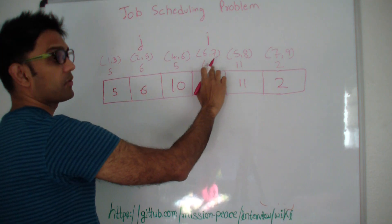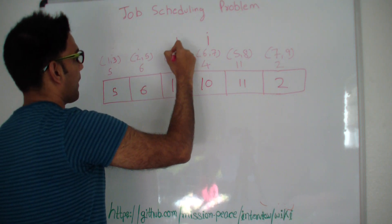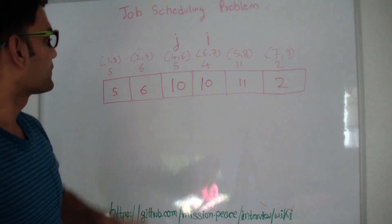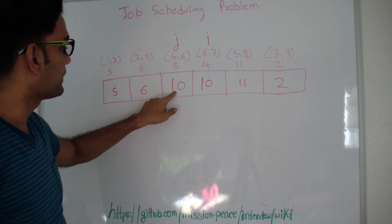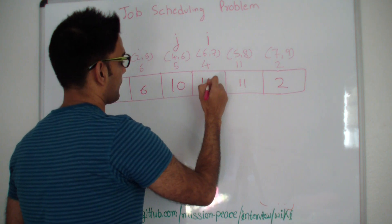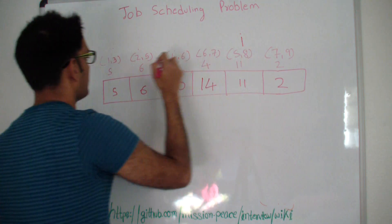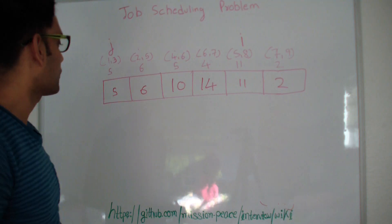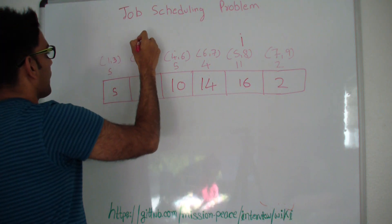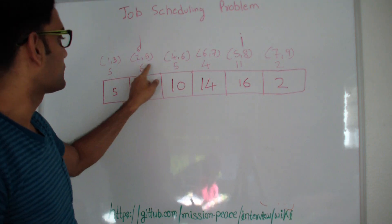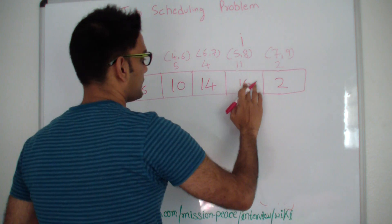Moving to job 5, J starts from the first element. Job 1 (1–3) and job 5 (5–8) do not overlap, so maximum we can make here is 11 plus 5 = 16. Moving J by 1: job 2 (2–5) and job 5 (5–8) do not overlap. Maximum we can make is 6 plus 11 = 17, which is greater than 16, so we change this entry to 17.